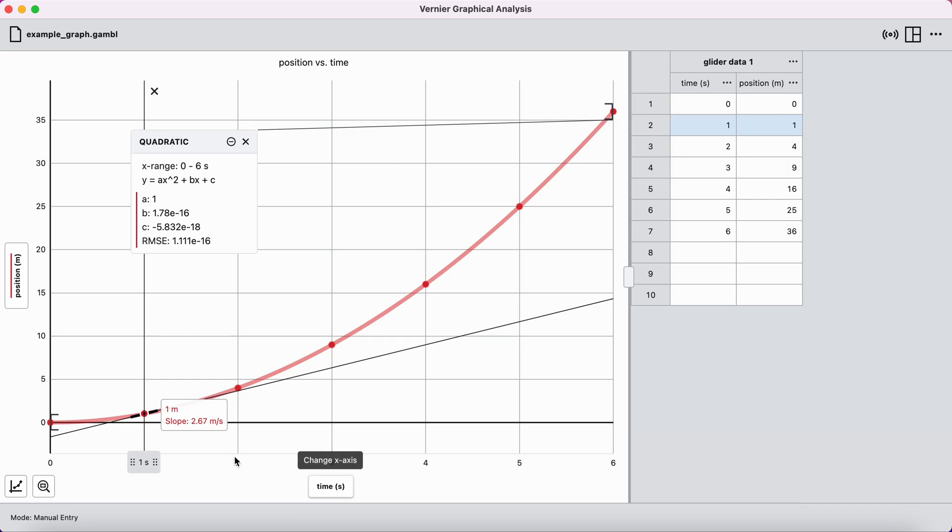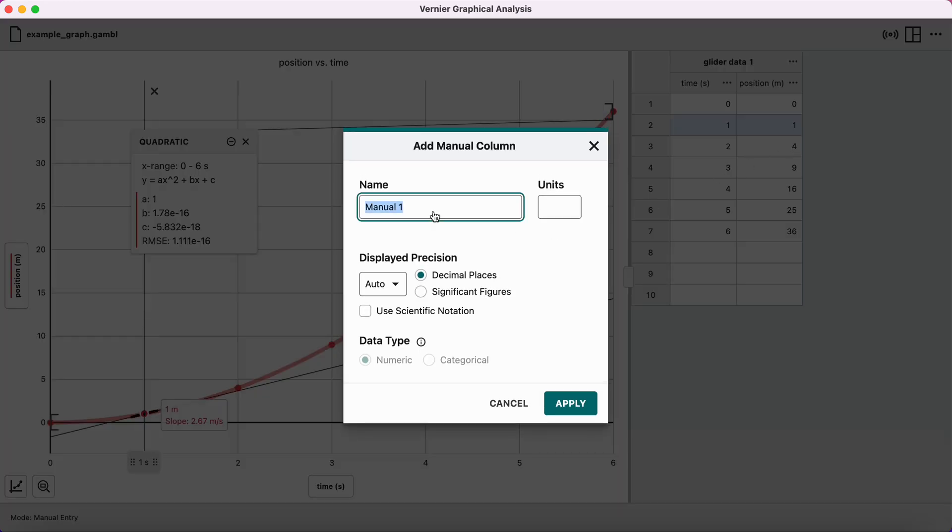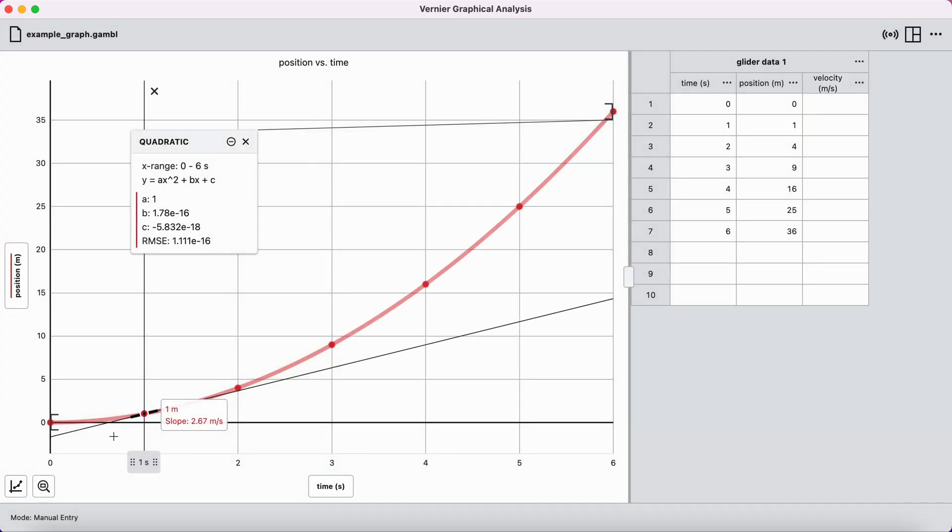I want to record this value. So, I'm going to go over to my data table and click the three dots next to where it says position. I'm going to choose the add a manual column option. This manual column I will call velocity, which is measured in units of meters per second. Now, I'll press apply. And now, I'll look at this tangent line, 2.67 meters per second. That happens at time t equals 1 second. So, I will enter 2.67 and add it to my data table here.